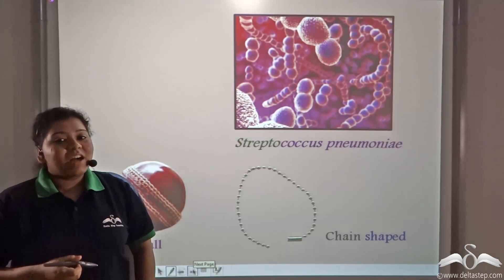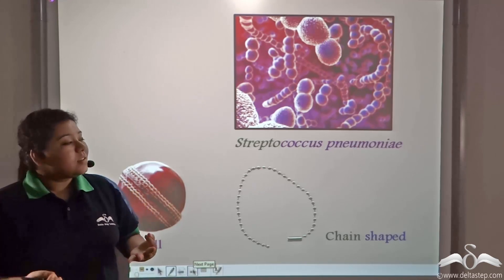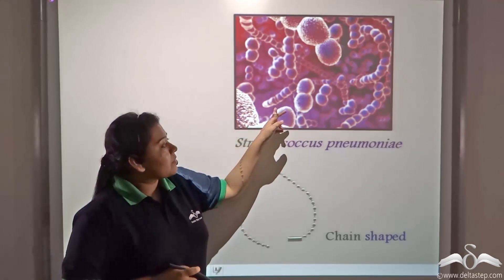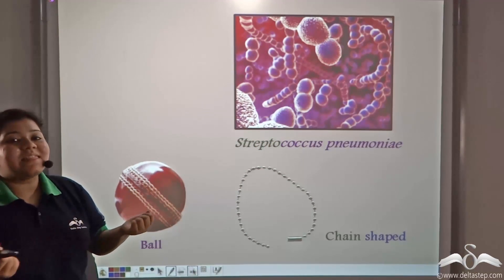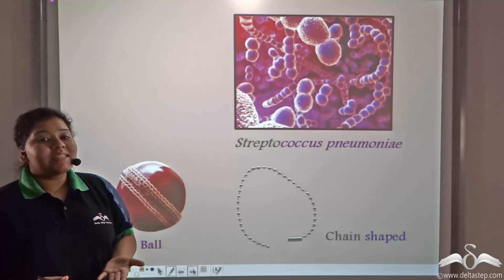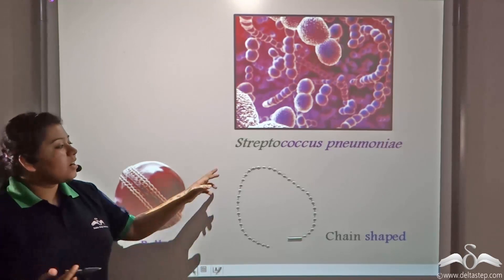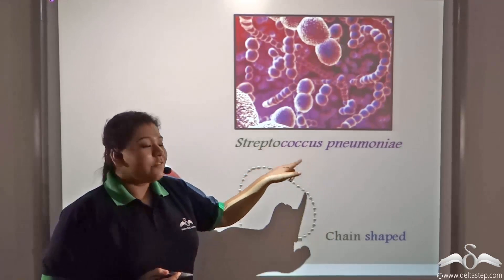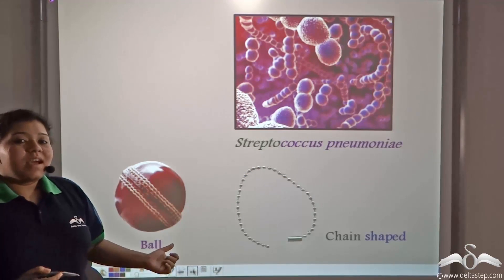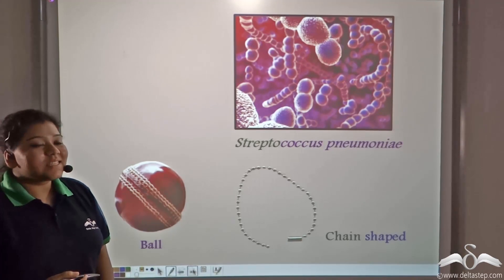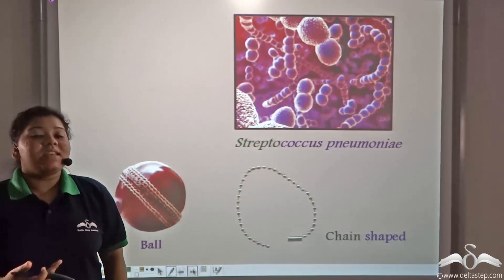So till now, we have discussed three diseases caused by bacteria of three different shapes. Now look at this bacteria — it has a ball-like shape and forms a chain-like structure. These spherical bacteria that form a chain are known as Streptococcus, where 'Strepto' means chain and 'Coccus' means a ball. One kind, Streptococcus pneumoniae, causes pneumonia in humans.